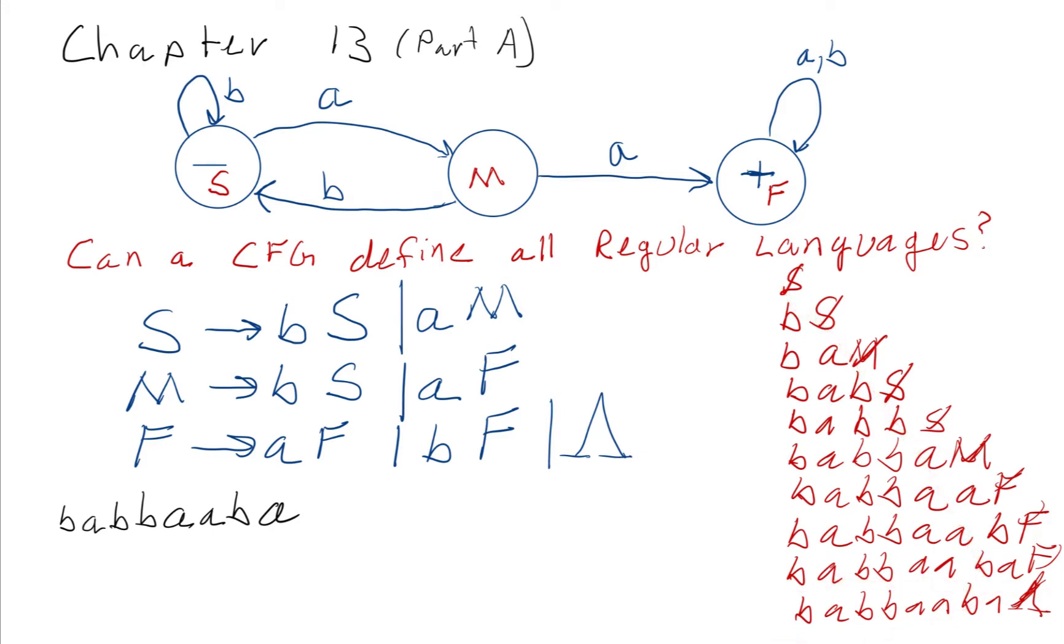You can see that we're able to generate this word through this sequence right here. That's the same sequence that a finite automata would run on this word. Notice the first one, we're in the start state to begin with. We read a b and go back to the start state. Then we read an a and go to state M.